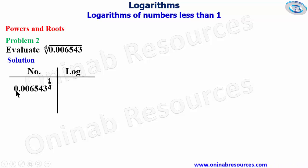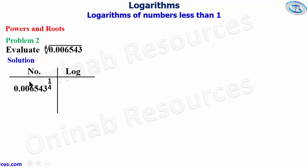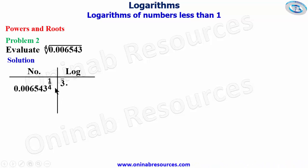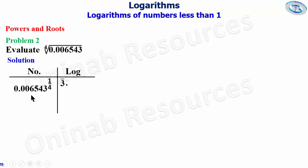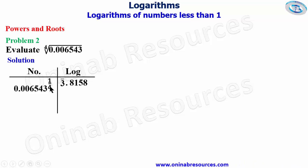We find the logarithm of this number. The integer part is going to be bar 3 — counting one, two, three until you get to the non-zero digit. We place our point, look for 65 under 4, differences of 3, in the logarithm table, and that gives 8158. Since the fractional index is one over four, we are going to divide the logarithm by four.